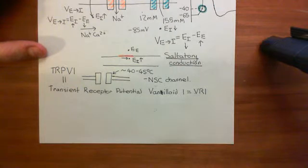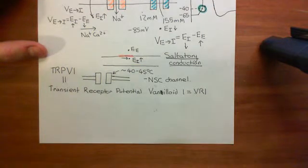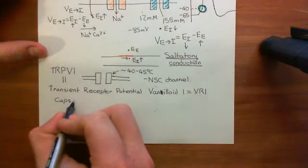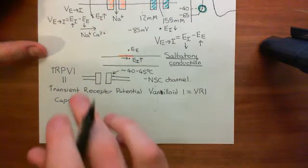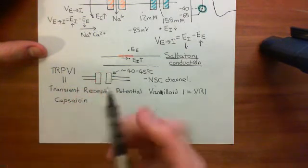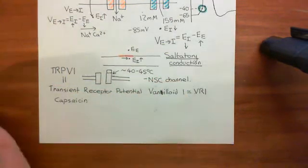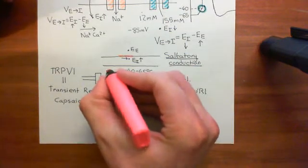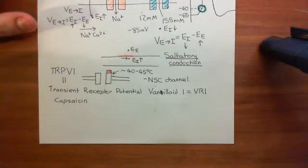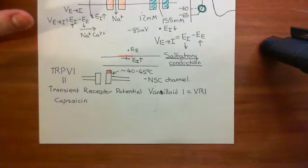Why is it called Vanilloid 1? Basically, this channel is sensitive to a molecule found within chili peppers. The reason that eating a chili makes your mouth feel like it's on fire is that chili contains an ingredient called capsaicin, which is an example of a vanilloid molecule. Capsaicin binds to TRPV1 channels and decreases the temperature at which they become active, so that a normal physiological temperature will now activate the TRPV1 channels in your nociceptors.